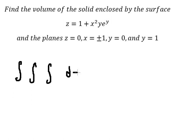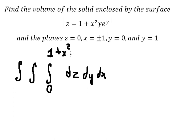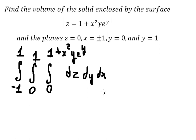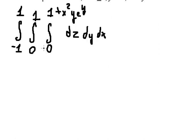So we have dz dy dx. For dz, it goes from zero to one. For dy, it goes from zero to number one, and dx goes from negative number one to positive number one. So we just finish setting up this one.